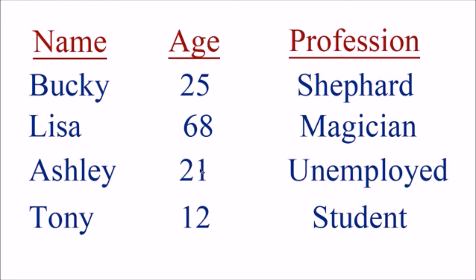Breaking databases up into tables and then into columns and rows helps organize your data in a very productive manner. Say we wanted to make a huge database storing all people in the United States. If we searched for a person named Bucky, it might return 6,000 results. If we searched for Ashley who is unemployed, that could return around 5,000 results — this isn't a really effective way to query a table because you can have a lot of duplicate entries.